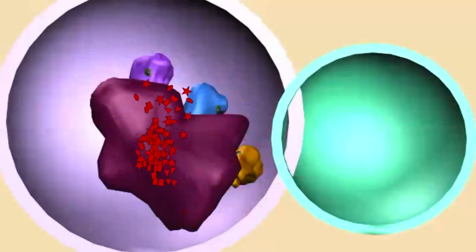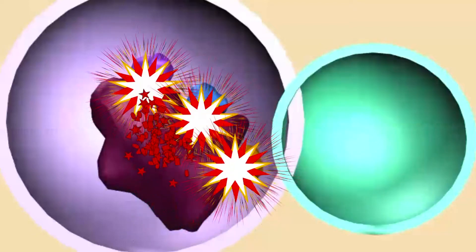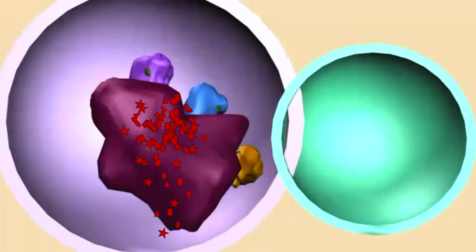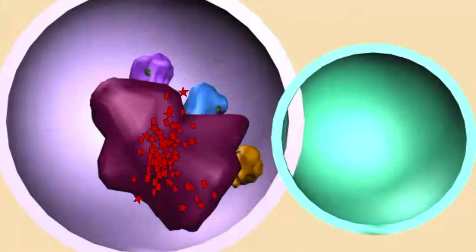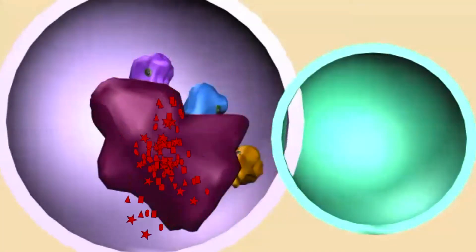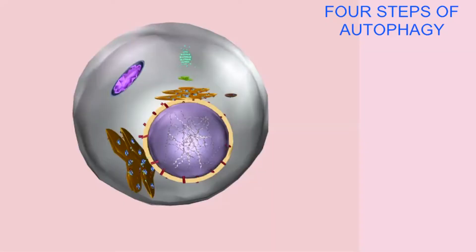Autophagy may also have a role in apoptosis. If sufficient amounts of autophagy do not occur, it is possible that this contributes to the general deterioration of aging.